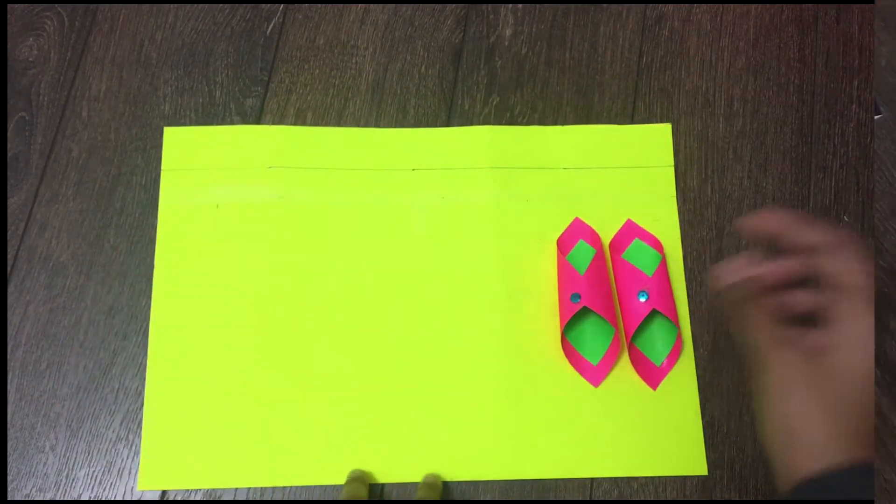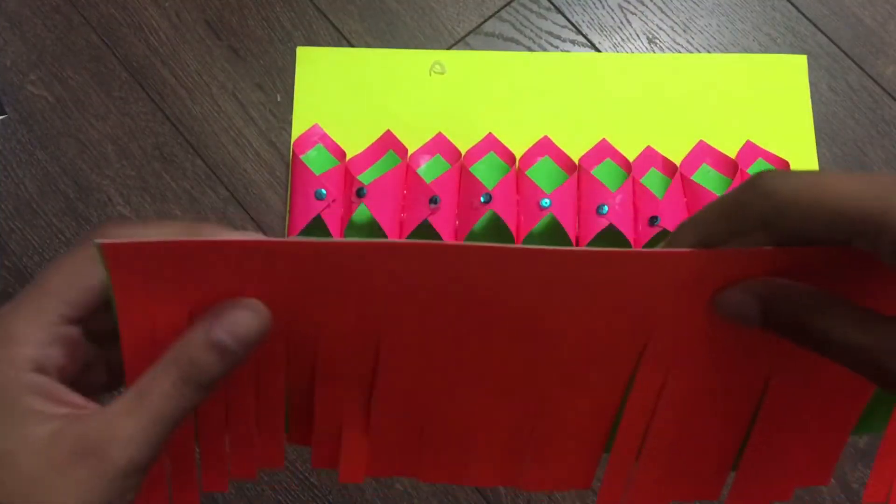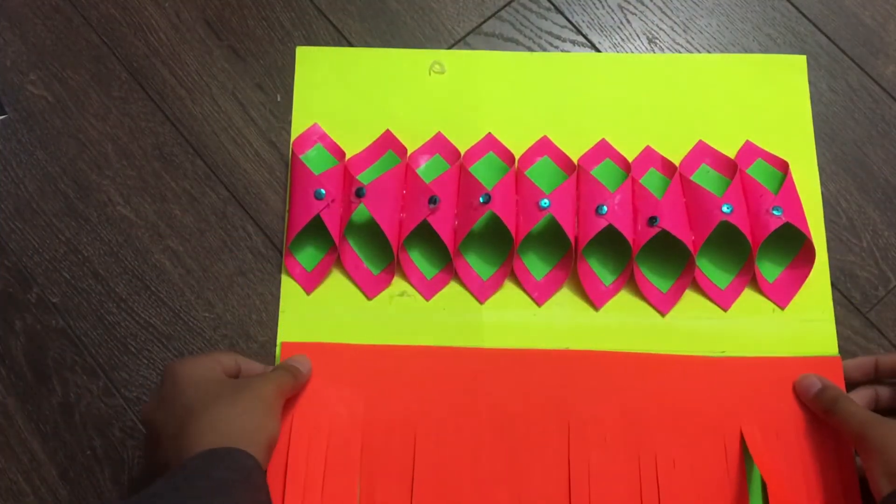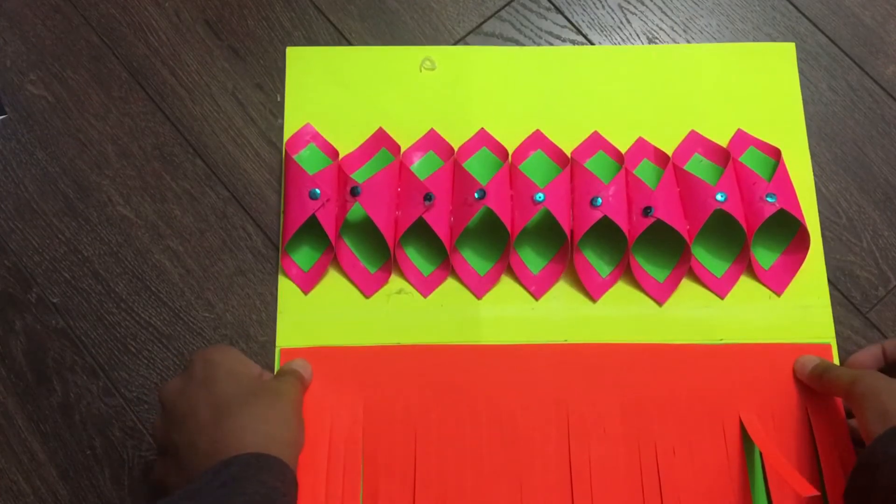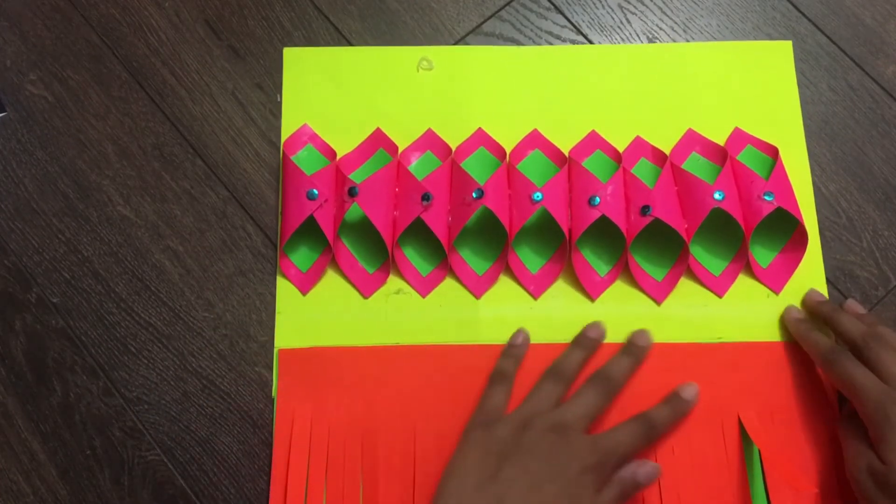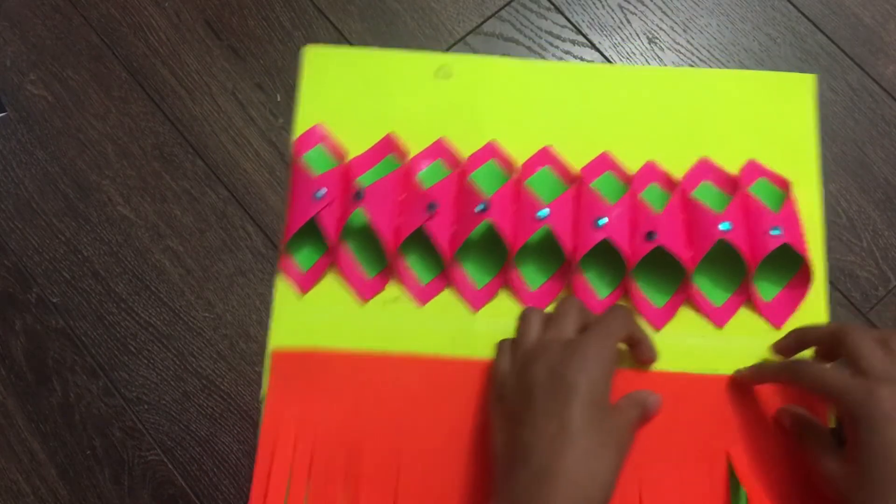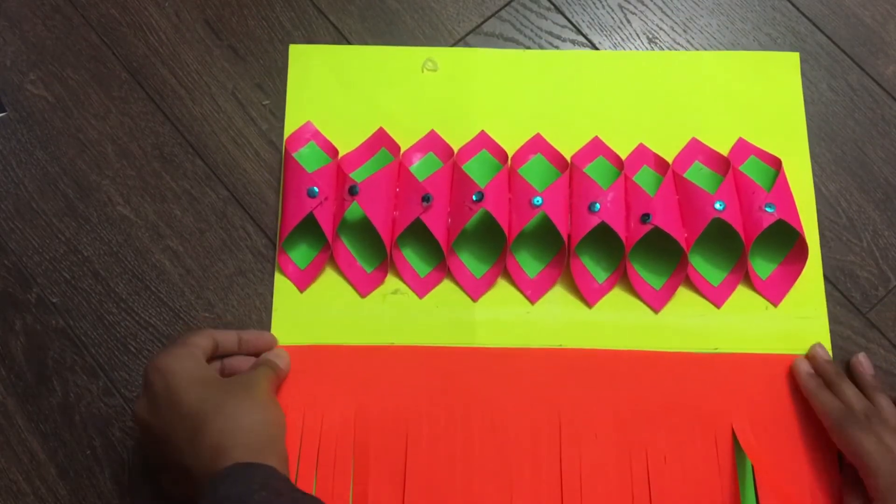So it should look something like this. Next we're gonna take the orange piece of paper and glue it onto the two centimeter part. So the orange block should go on the yellow block.